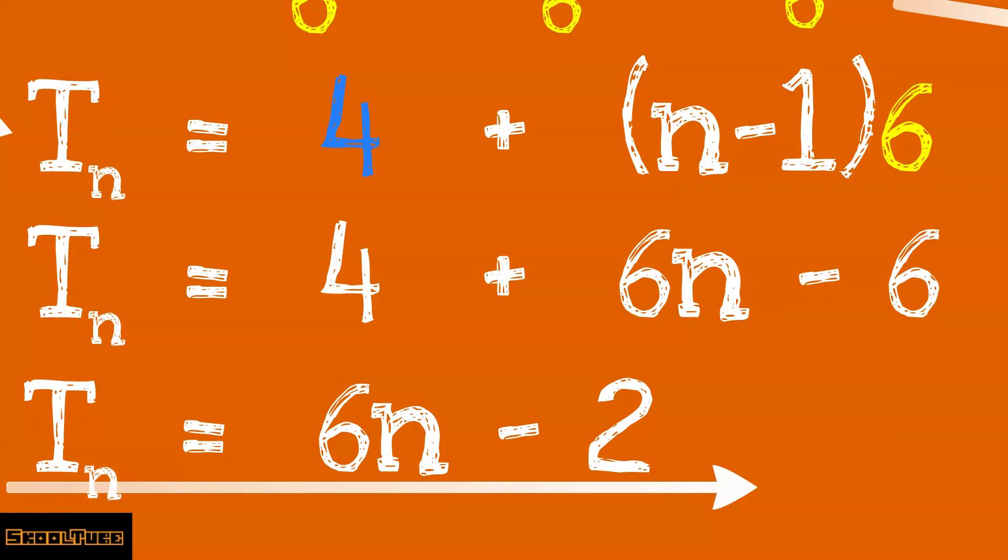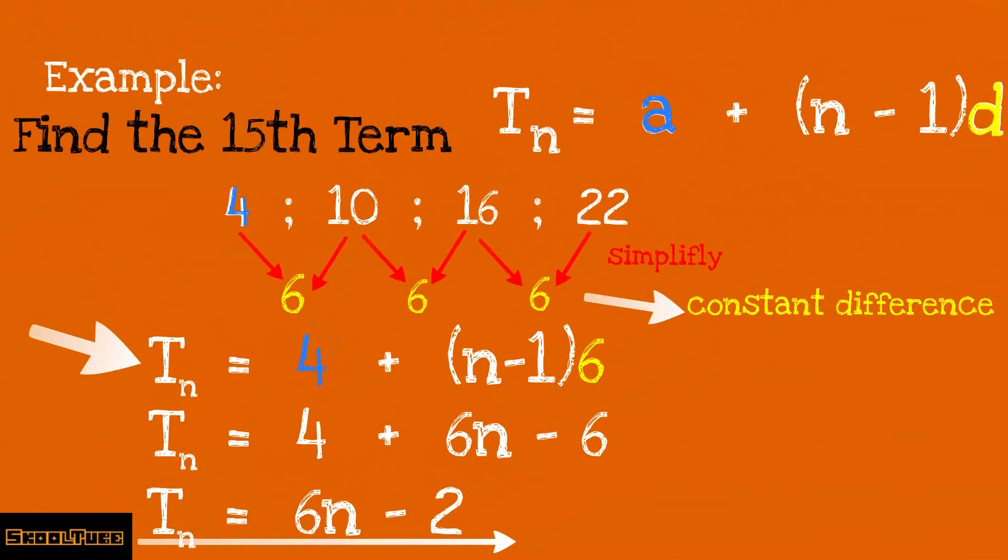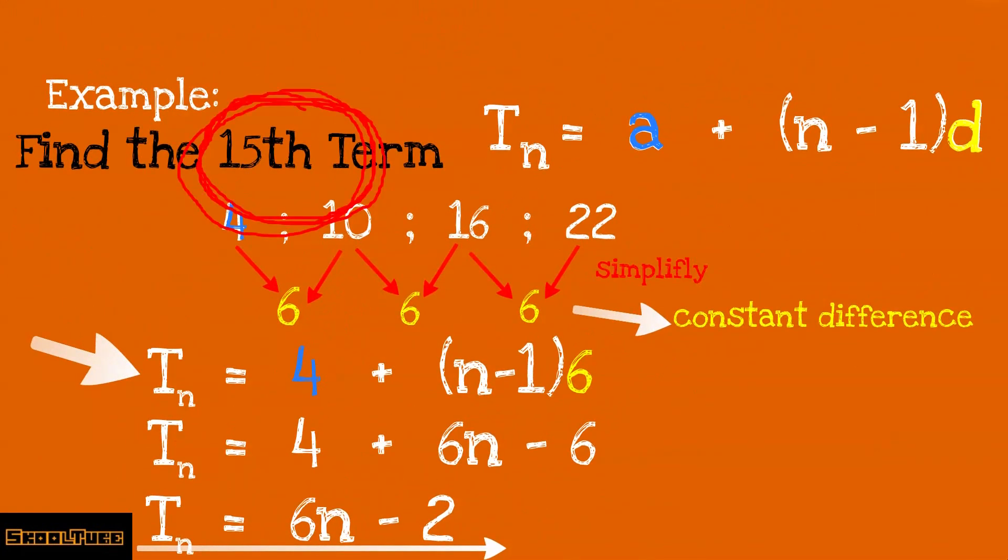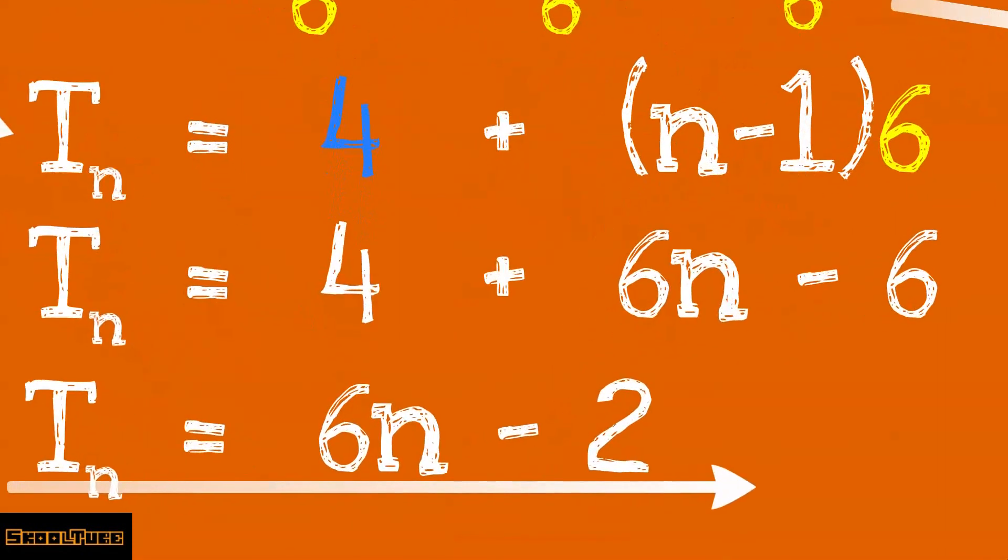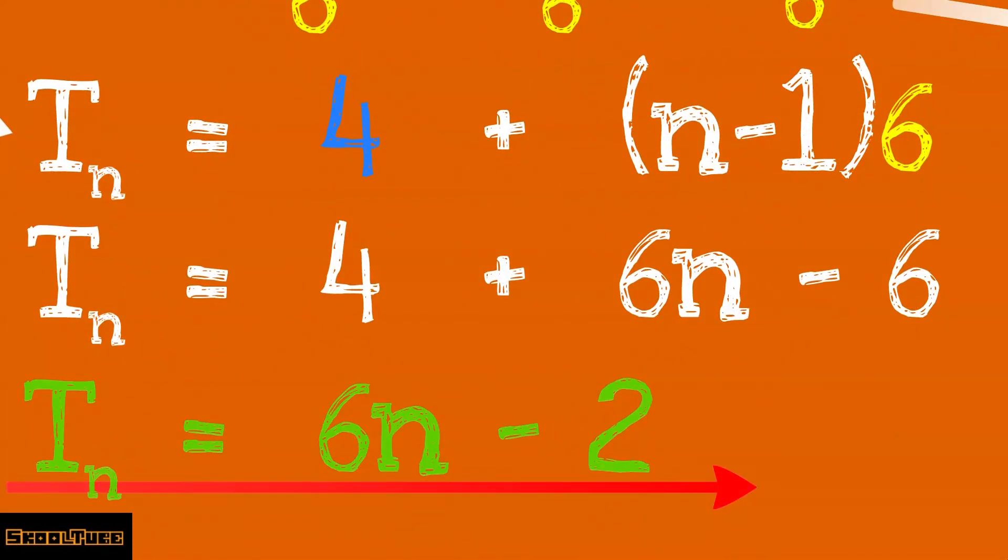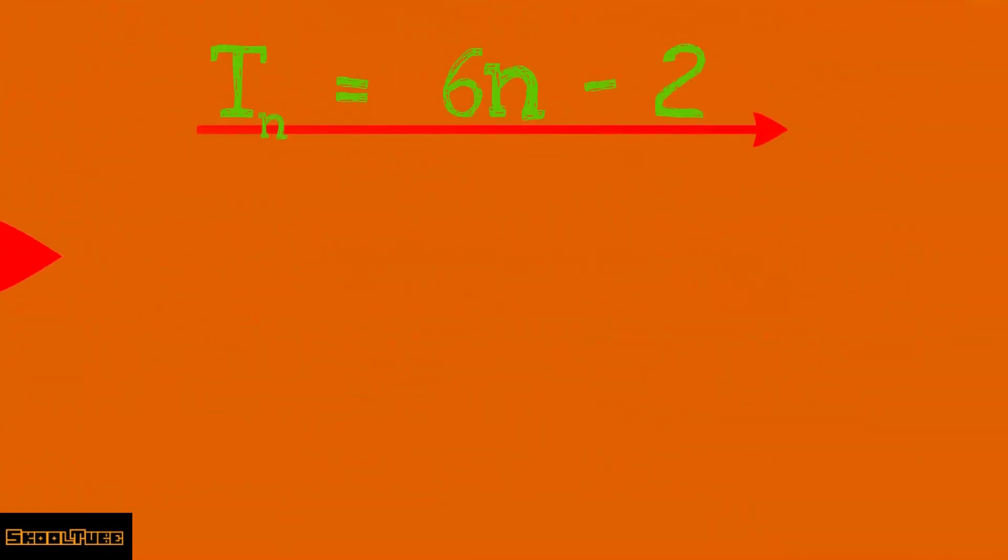But we were not asked to find the general term. We were asked to find the 15th term. But we will use the general term we found in order to find the 15th term. So Tn equals 6n minus 2. But n equals 15. We are looking for the 15th term.